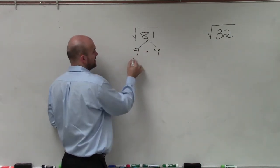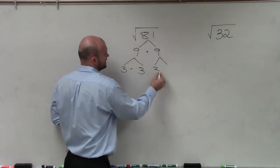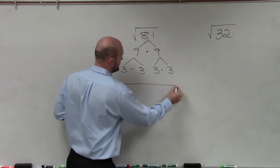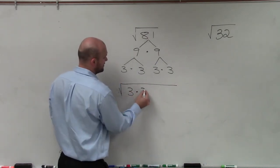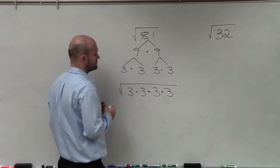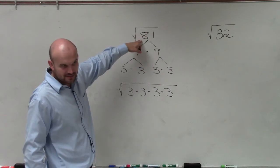And I can break 9 into 3 times 3, and that into 3 times 3. So what we have here is what we call the prime factorization. So does 3 times 3 times 3 times 3 equal 81? Does that make sense to you?